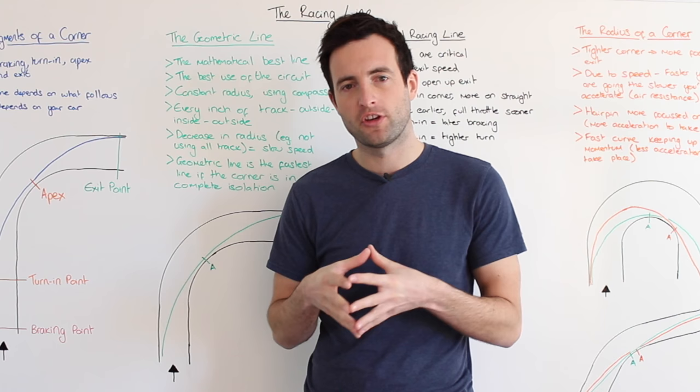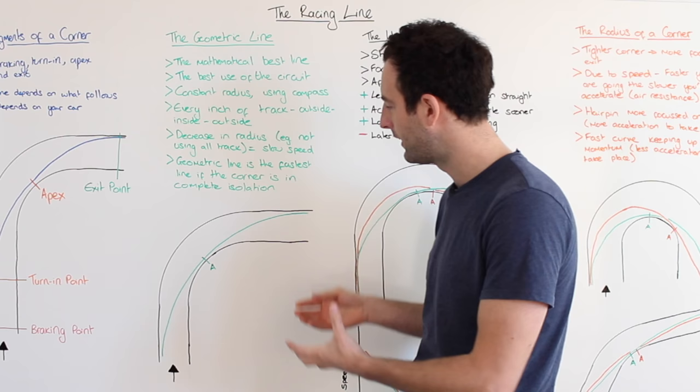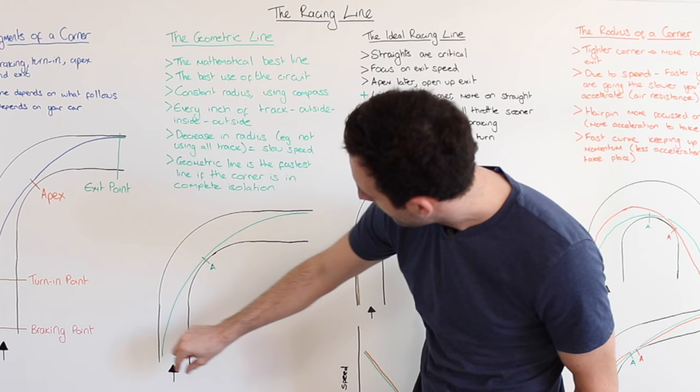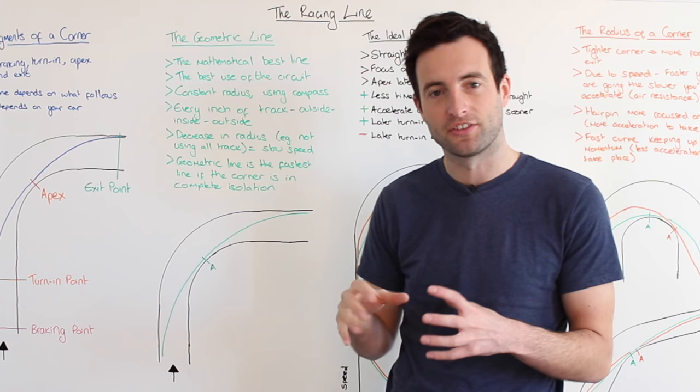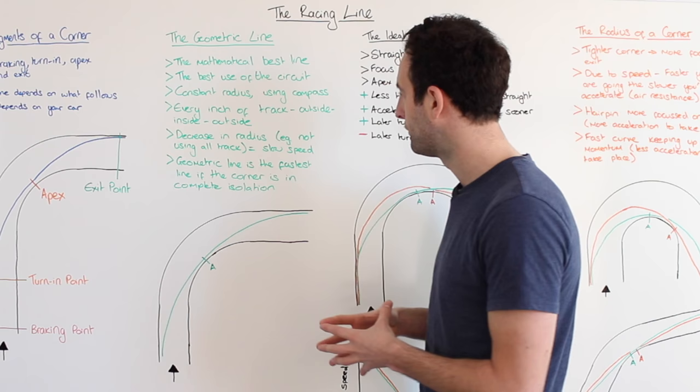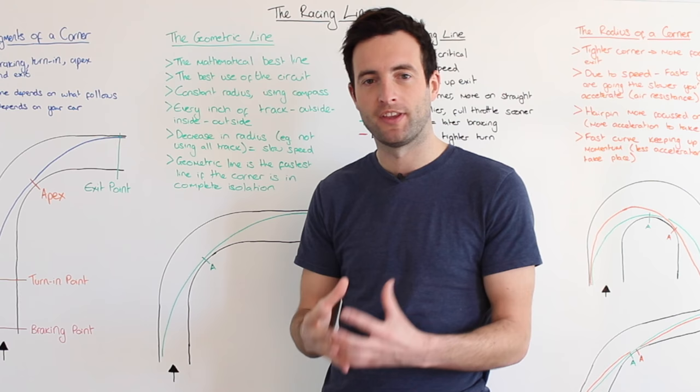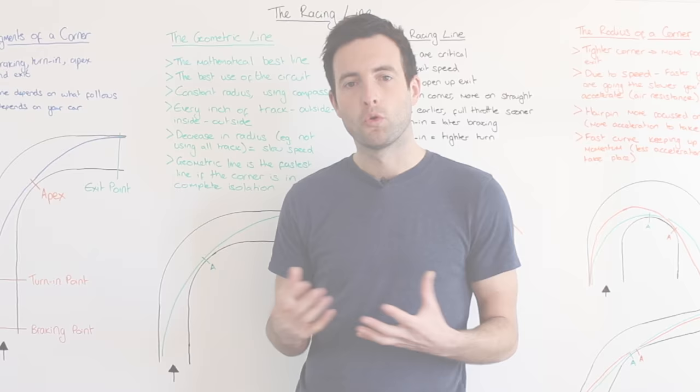So now we're going to take a look at the geometric line. The geometric line is the perfect mathematical best line through a corner if there's nothing else influencing that corner — it's the best use of a circuit. You can see here on the green line we have the perfect geometric line. It's actually symmetrical side to side and it's the line of least resistance as you're coming through a corner — the biggest arc that you can take. As you can see here we're using every inch of the circuit, going from the outside to the outside again.